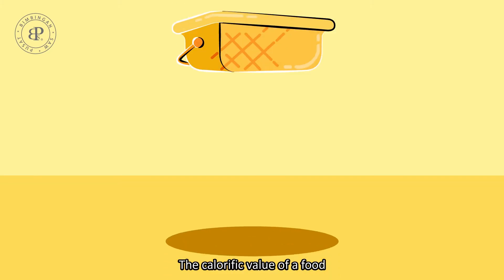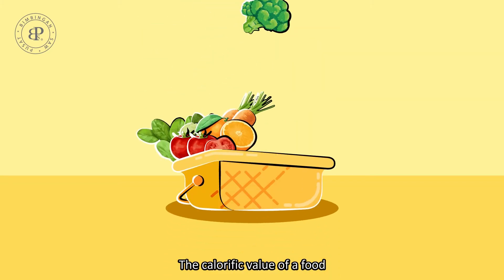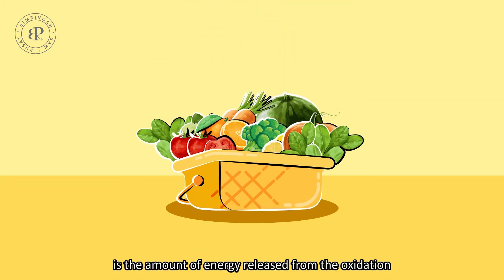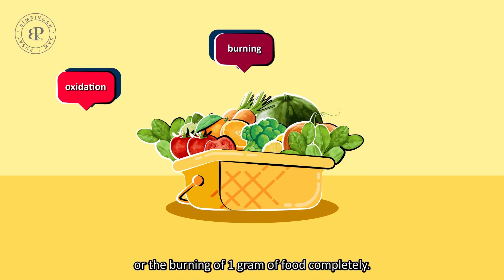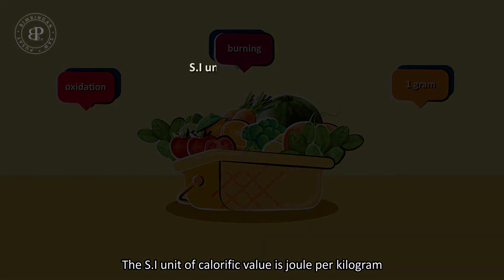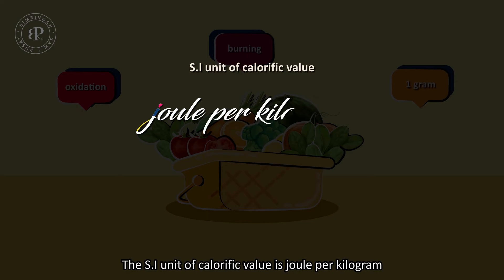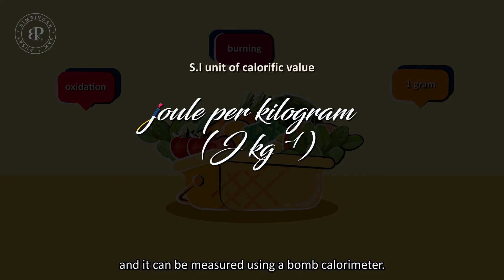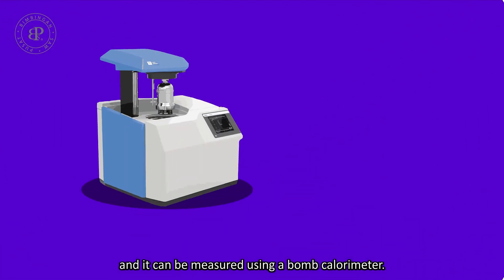The calorific value of a food is the amount of energy released from the oxidation or the burning of one gram of food completely. The SI unit of calorific value is joules per kilogram, and it can be measured using a bomb calorimeter.